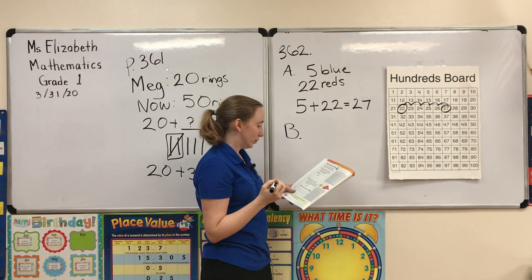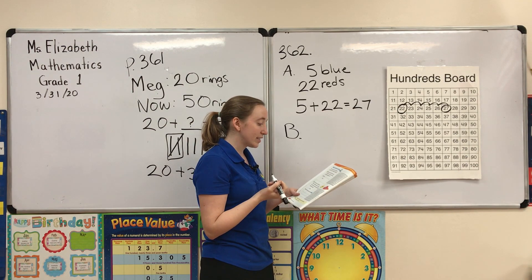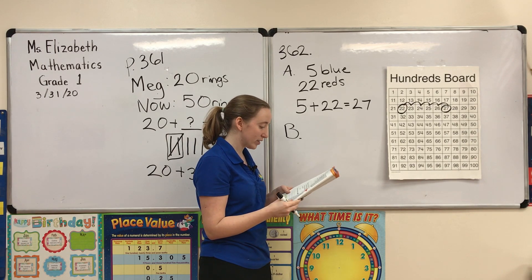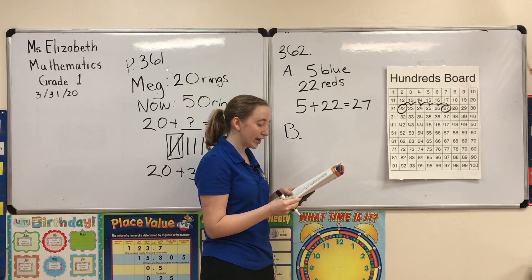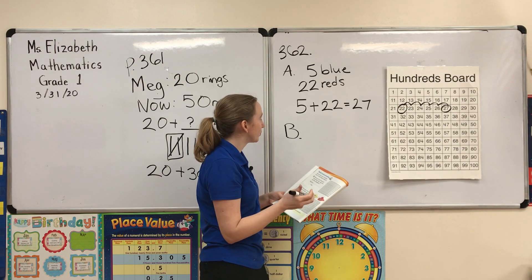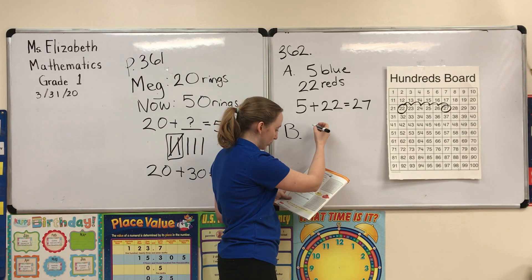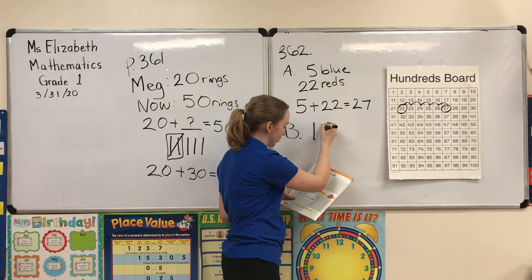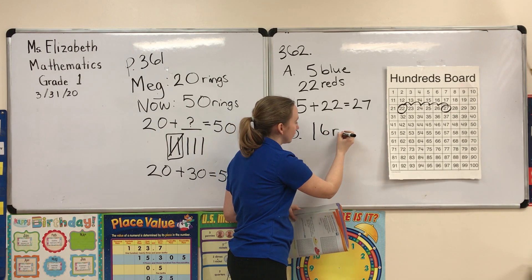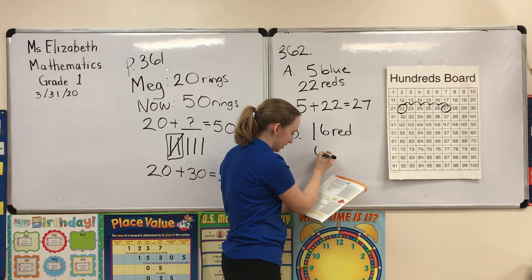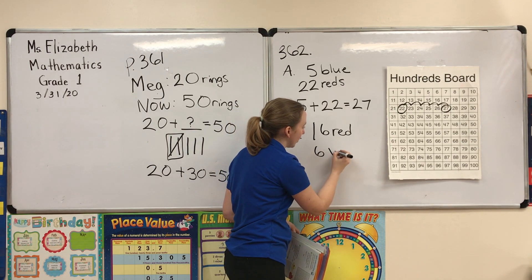Moving on to B: Carol sees 16 red hats and six yellow hats in a store. How many red and yellow hats does she see? We know she has 16 red hats and six yellow hats.